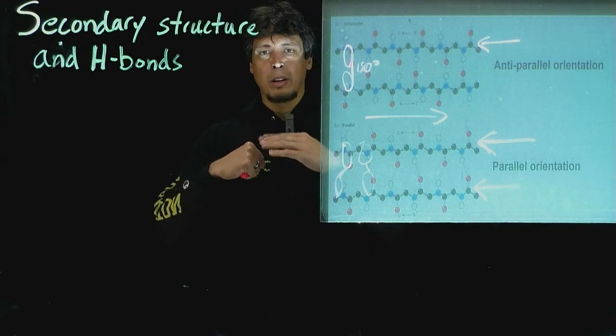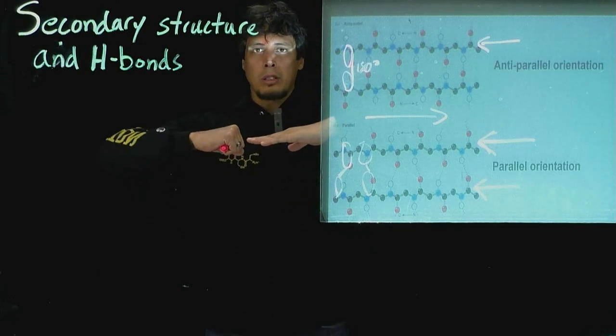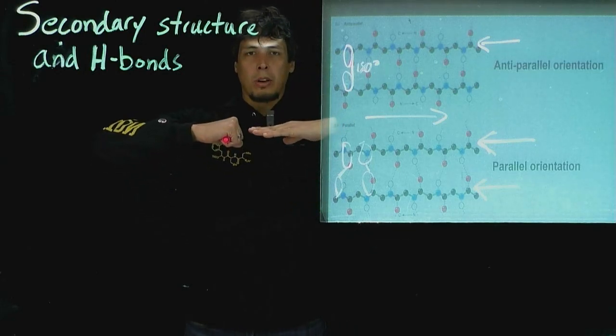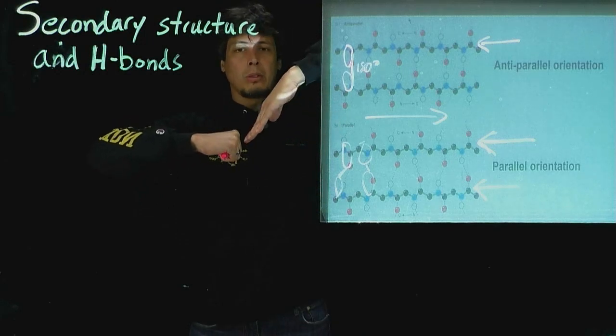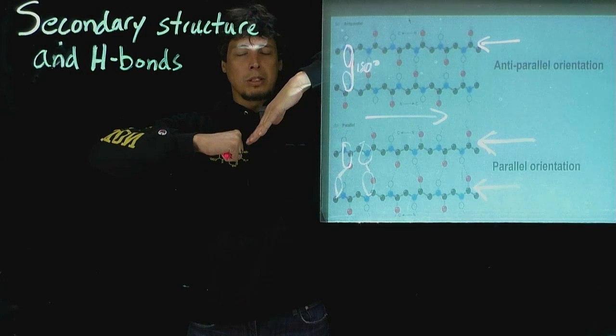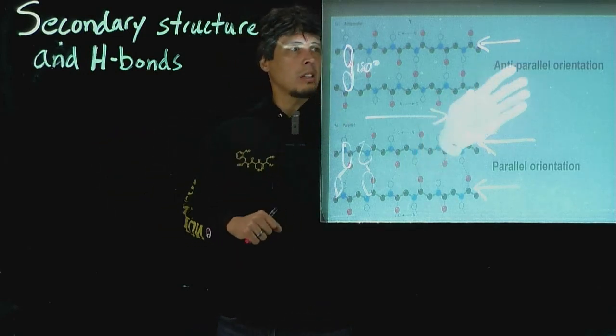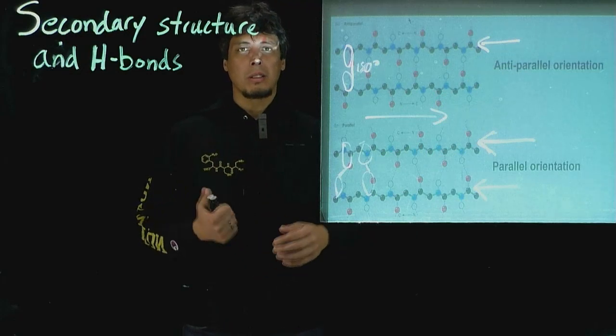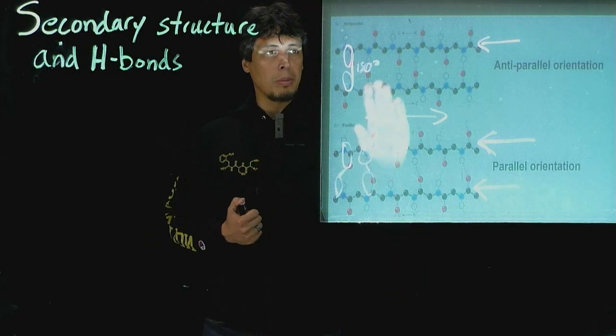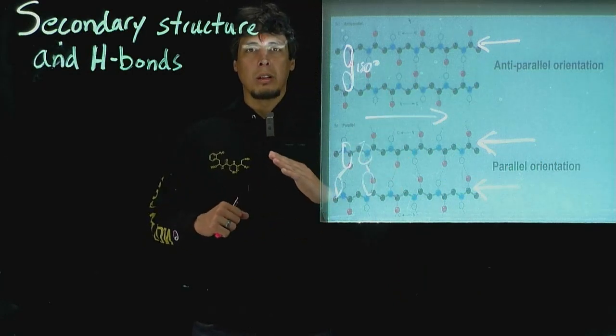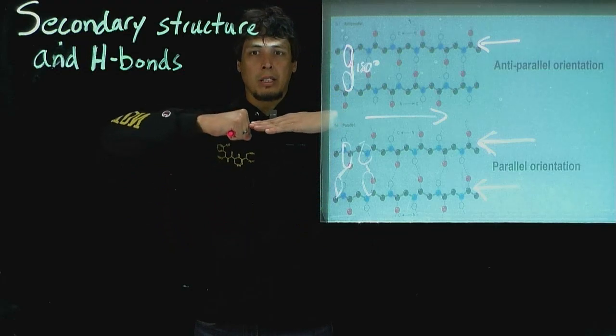So a donor and acceptor that are head-on like this are going to form the strongest hydrogen bonding. Ones that angle relative towards each other are going to have a weaker hydrogen bond. So an anti-parallel orientation provides the most stability from the hydrogen bonding over the parallel orientation because of the angle between the H-bond donor and the H-bond acceptor.